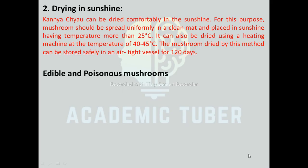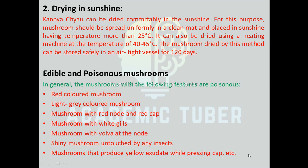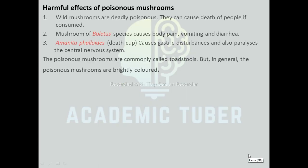Edible and Poisonous Mushroom. In general, mushrooms with the following features are poisonous: red colored mushroom, light gray colored mushroom, mushroom with red nodes and red cap, mushroom with white gills, mushroom with vulva and nodes, shining mushroom untouched by any insects, and mushroom that produces yellow liquid when pressing caps. Harmful effects of poisonous mushrooms: if consumed, they can cause death. Mushroom of Boletus species causes body pain, vomiting, and diarrhea. Amanita phalloides (death cup) causes gastric disturbances and also paralyzes the central nervous system. In general, poisonous mushrooms are brightly colored.